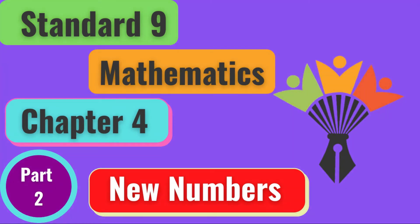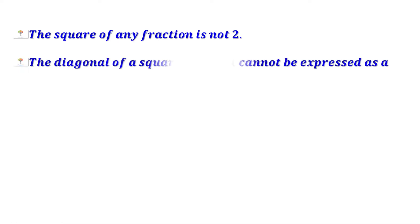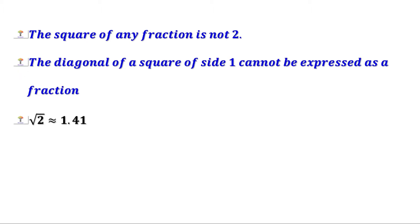Welcome to Maths Companion. Let us recall what we have learned in the last video. We learned that the square of any fraction is not 2, the diagonal of a square of side 1 cannot be expressed as a fraction, the approximate value of root 2 is 1.41, and the approximate value of root 3 is 1.73. There was a homework. Let us check the answer now.